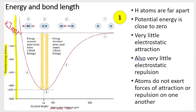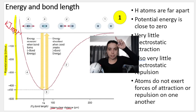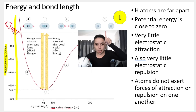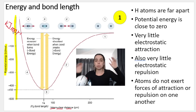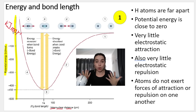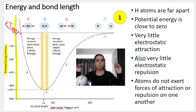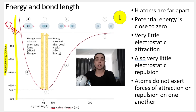Now back to situation number one. In situation number one, our hydrogen atoms are very far apart from each other. Look at the little diagram - the hydrogen atoms are very far apart. Their potential energy is close to zero. There's very little attraction and very little repulsion. That's what's happening in situation number one: far apart, don't know each other yet, no attraction, no repulsion.